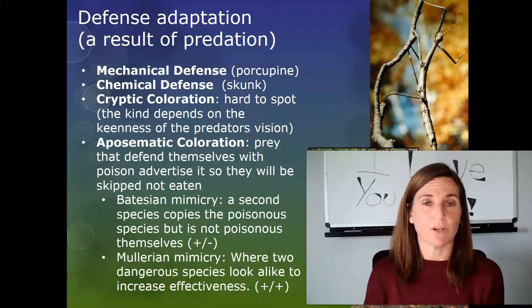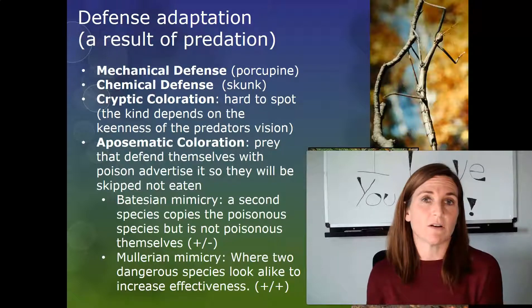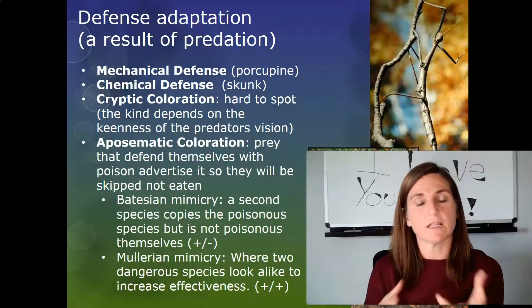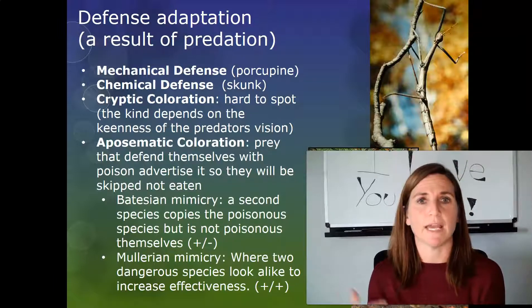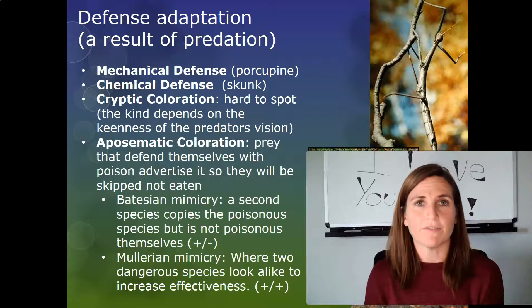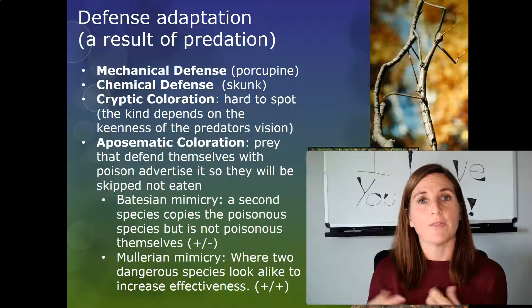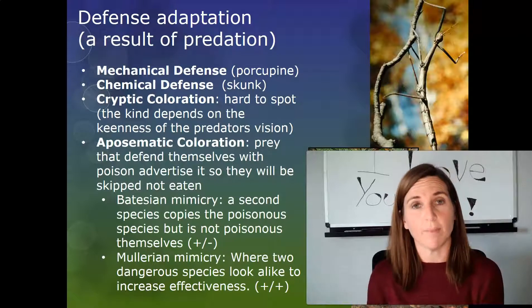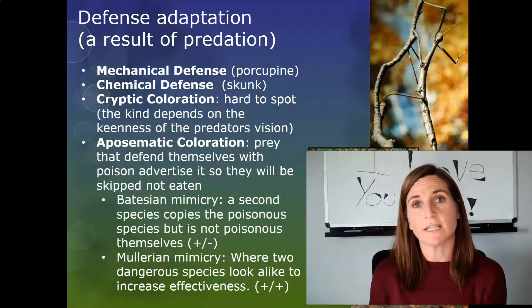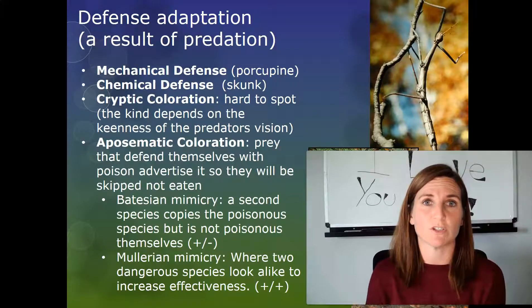Chemical defenses include things like a skunk's terrible smell, or toxic slime on an amphibian or frog that keeps things from eating it because they wouldn't want to get sick. Another chemical defense is used by monarch butterflies: the monarch eats the toxic milkweed plant in its pupal stages, and once it becomes a butterfly it is actually toxic — it will make you throw up, deterring predators from eating them.